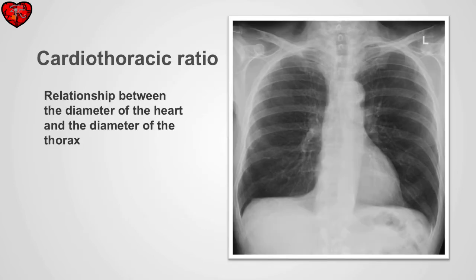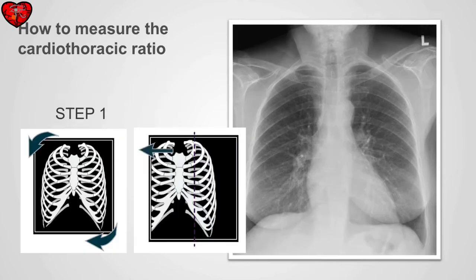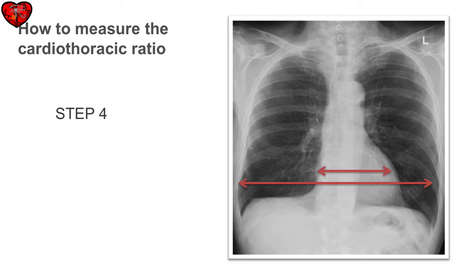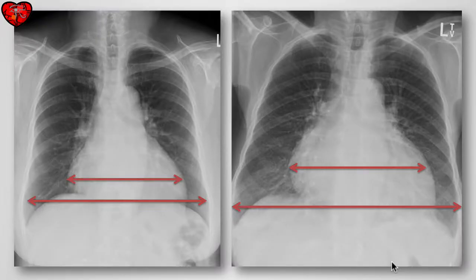When we talk about the size of the cardiopericardial silhouette, we usually talk about the cardiothoracic ratio — the relationship between the diameter of the heart and the diameter of the thorax. To measure it, first ensure the patient is properly centered and not rotated. Then measure the widest diameter of the cardiopericardial silhouette, and then the widest diameter of the thorax from left to right. The cardiothoracic ratio should be less than 50%.